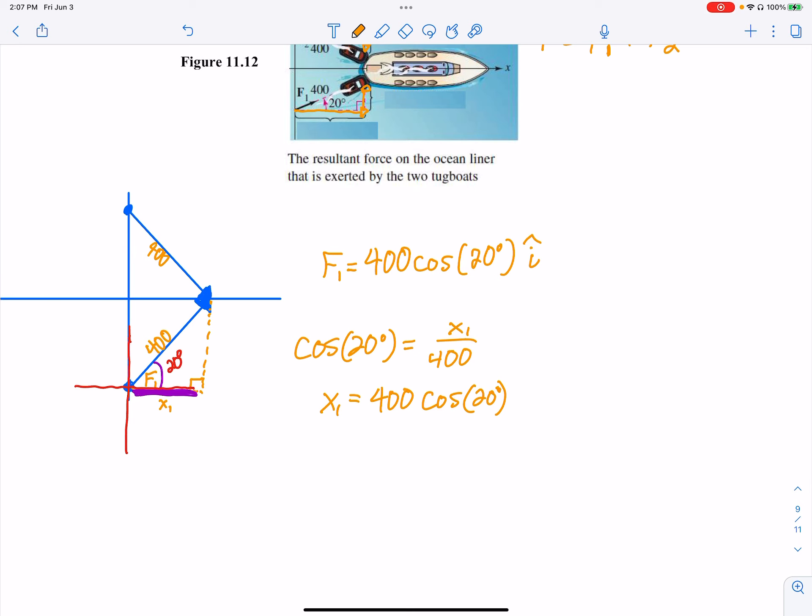Now, to find the J component, I would do sine of 20 degrees, because that's my Y. Of Y1, we'll call that Y1 up here, is Y1 over 400. It's using trig, sine of that would be opposite over adjacent. So Y1 equals 400 sine of 20 degrees. So that's plus, I leave this 400 sine of 20 degrees J.